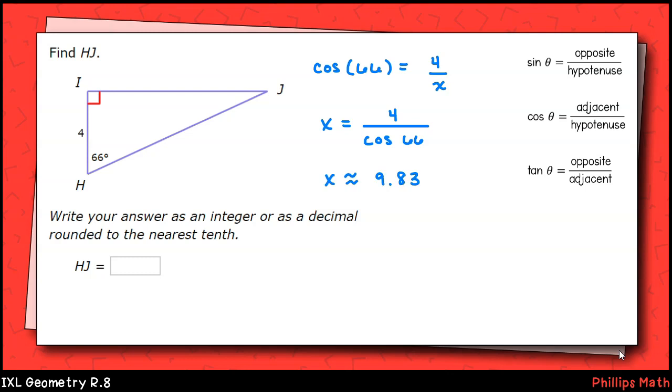Using our calculator, which needs to be set to degrees, we'll tap in 4 divided by cosine 66. We'll get approximately 9.83. Rounded to the nearest tenth, that'll be 9.8.